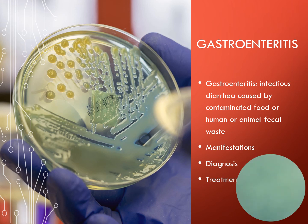Gastroenteritis can cause large losses of body water and electrolytes. The skin gets extremely dry and begins to lose turgor. In infants, the fontanelle will become depressed or sunken. They have a weak and rapid pulse. Stools might be green in color, more liquid, and may be blood-tinged. For diagnosis, get a stool specimen and send it for culture, and check whether they have a temperature.